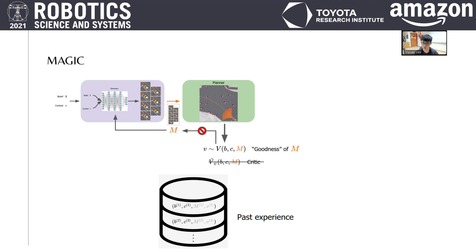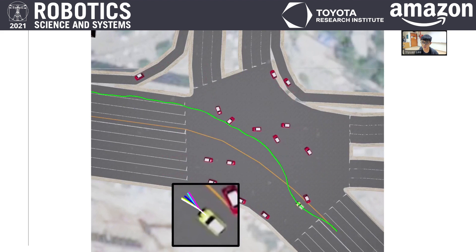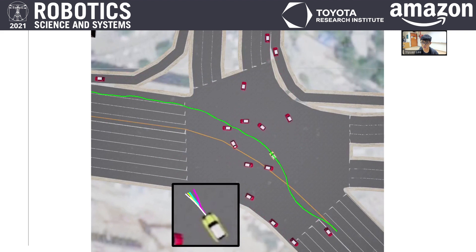Using MAGIC, the learned generator produces situation-aware macro actions that lead to long-horizon behavior, such as maneuvering smoothly ahead of time to avoid incoming collisions. It also learns to overtake slow-moving cars gracefully ahead of time.